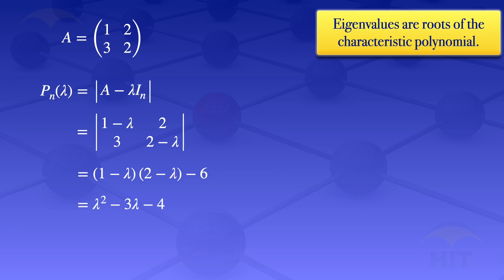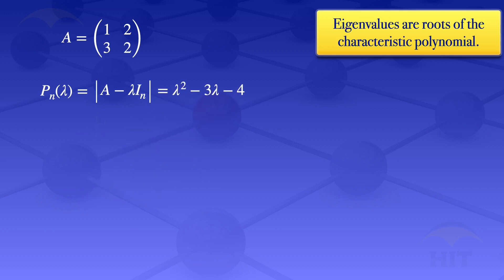So our characteristic polynomial is lambda squared minus 3 lambda minus 4. And earlier we said that the eigenvalues are the roots of the characteristic polynomial, so to find those eigenvalues, we have to find the roots of lambda squared minus 3 lambda minus 4.